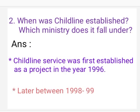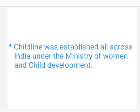Second question: When was child line established, and which ministry does it fall under? Answer: Child line service was first established as a project in the year 1996. Later, between 1998 to 1999, child line was established all across India under the Ministry of Women and Child Development.